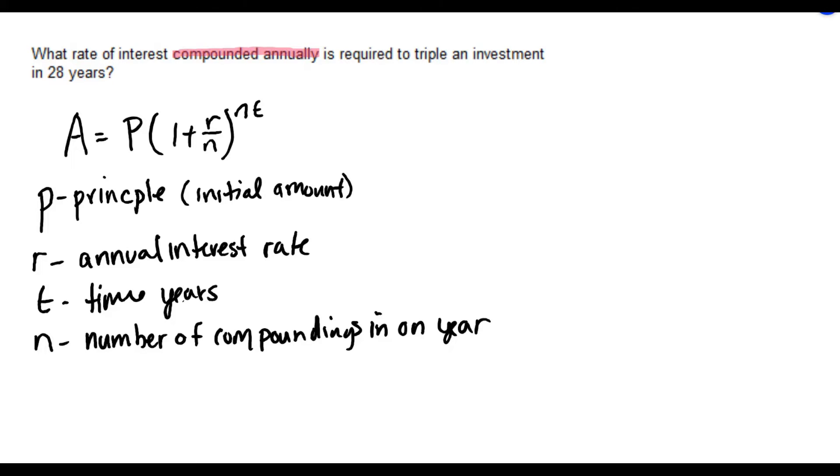Compoundings refer to how often interest is added into the account. Most savings accounts would add interest monthly and N would be 12 for 12 months in a year.